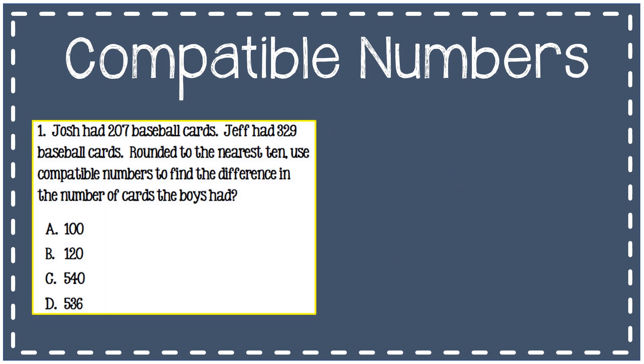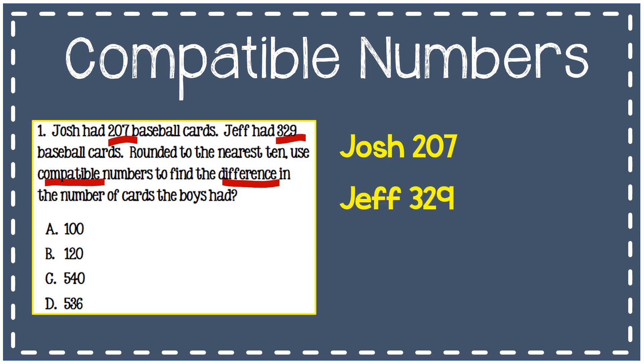Let's look at an example of compatible numbers being used to subtract. Josh had 207 baseball cards. Jeff had 329 baseball cards. Round to the nearest ten. Use compatible numbers to find the difference in the number of cards the boys had. I know that Josh had 207 baseball cards and Jeff had 329, and I'm going to round those to the nearest ten, as the problem told me.